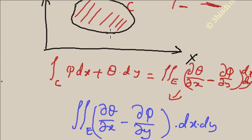The exact meaning of Green's Theorem is that if you integrate phi dx plus theta dy along this curve, where phi and theta are any functions of X and Y, then this relation holds true. You can get the answer by using this relation.